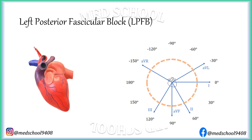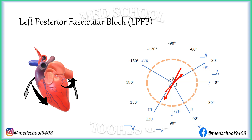In posterior fascicular block, conduction starts through the anterior fascicle in the anterosuperior direction. Then the impulse goes through the posterior wall encircling the lateral border. For conduction through the anterior fascicle, the vector is directed to the left and superiorly. For this vector, leads 1 and AVL show an R wave, whereas leads 2, 3, and AVF show a Q wave. For conduction through the posterior fascicle, the vector is directed downward and right. For this vector, leads 1 and AVL show an S wave, whereas leads 2, 3, and AVF show an R wave. So, there is an RS pattern in leads 1 and AVL, and a QR pattern in leads 2, 3, and AVF.